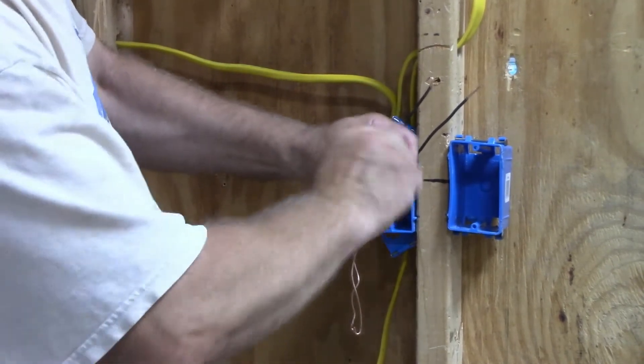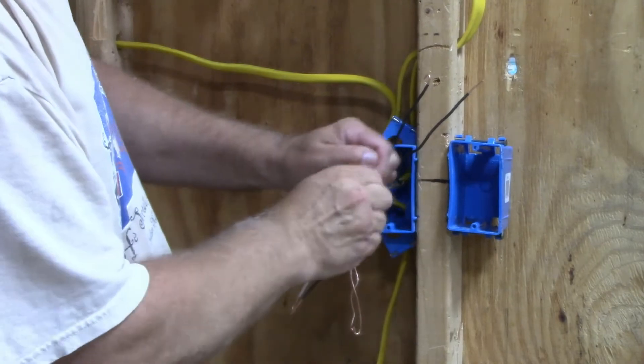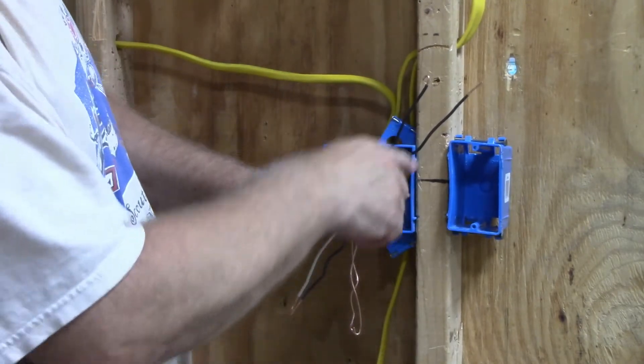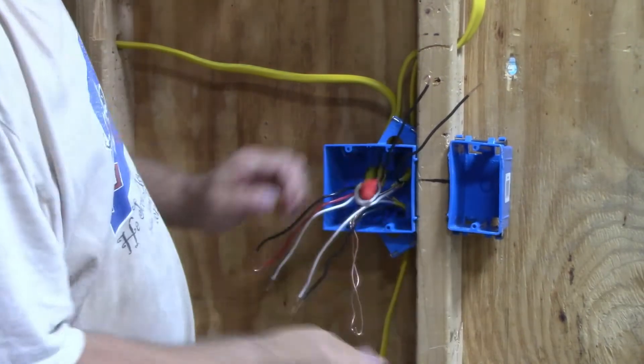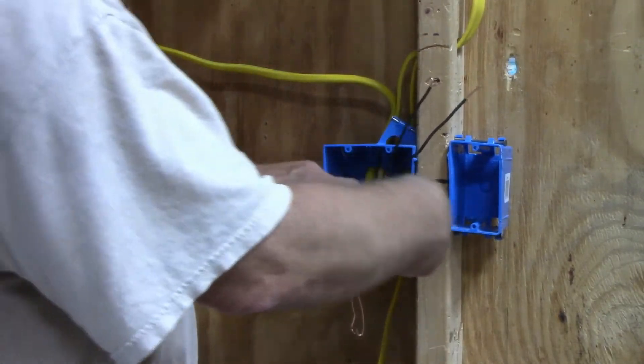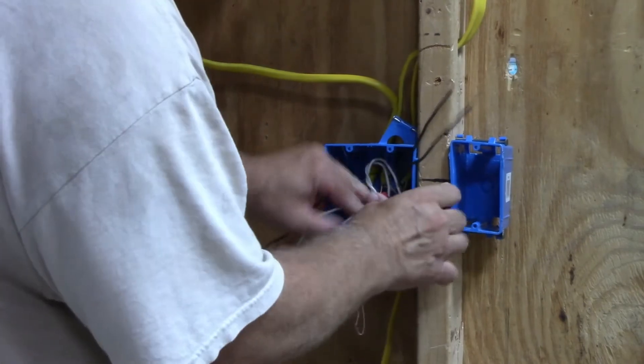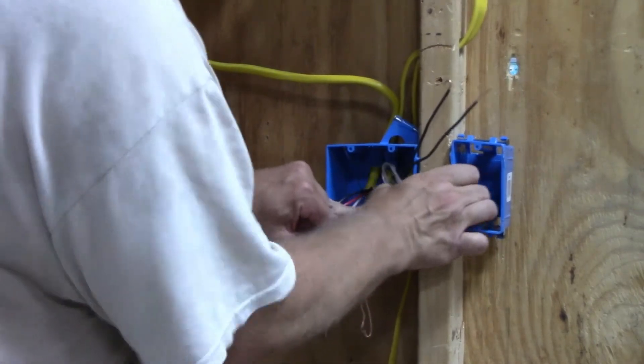If you're using the new switches that have a neutral on them, then you would have to run a pigtail from this onto the switch. I'm going to make sure that I've got a good, tight connection, and I'm going to fold my neutrals into my box.